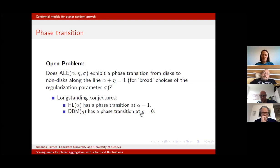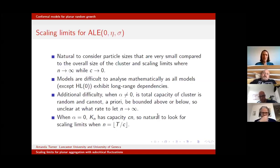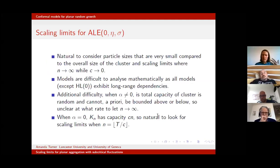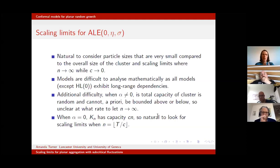What we'd like to prove is a phase transition from discs to non-discs along the line α + η = 1, for broad choices of the regularization parameter σ — we don't want to tune σ very carefully. This ties into long-standing conjectures: the Hastings–Levitov model has a phase transition at α = 1, and dielectric breakdown has a phase transition at η = 0.